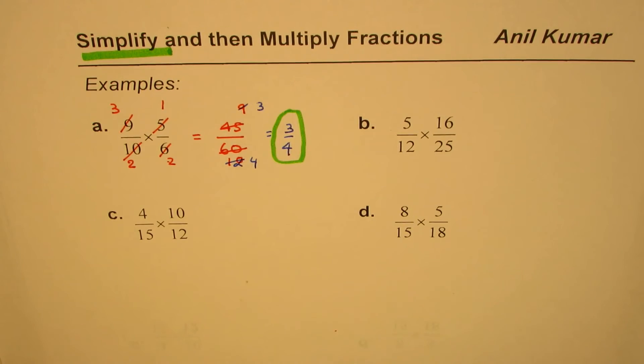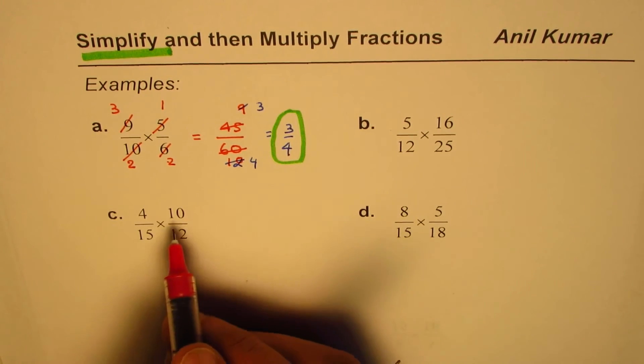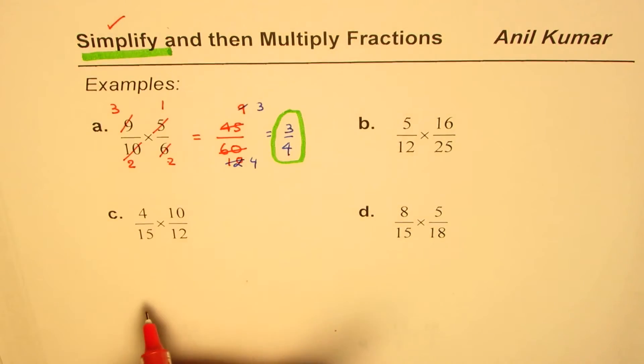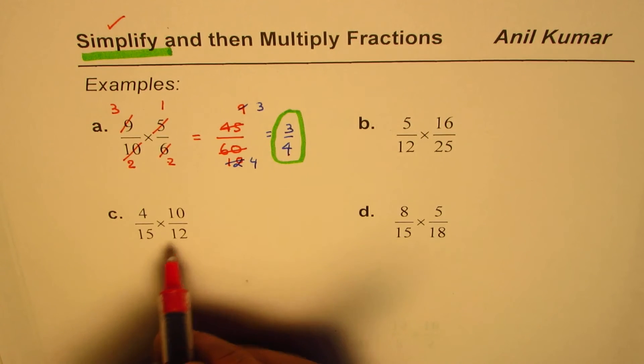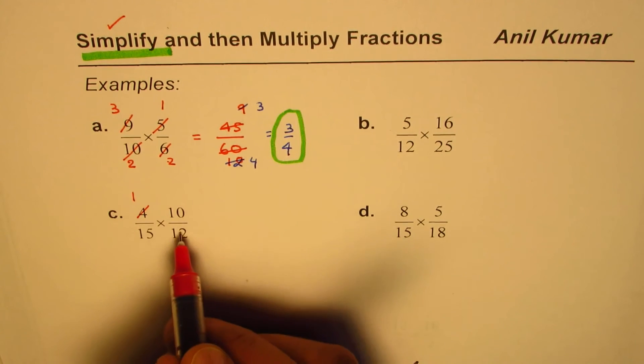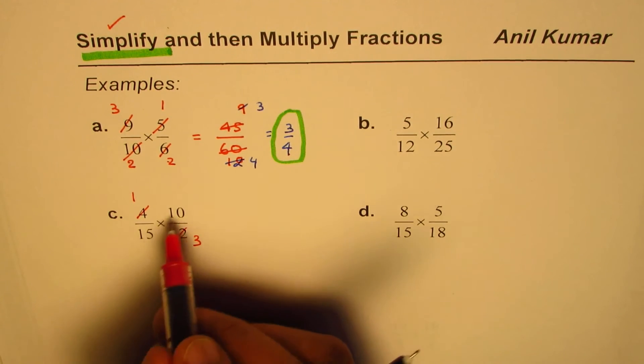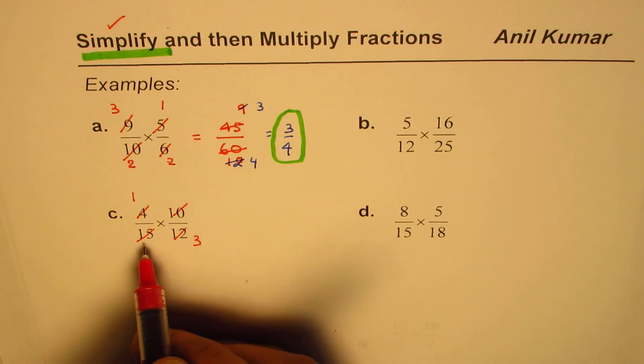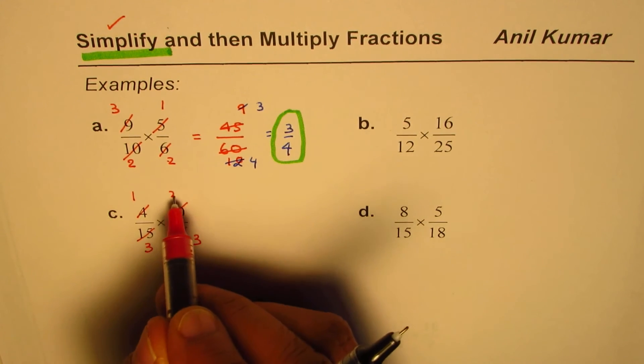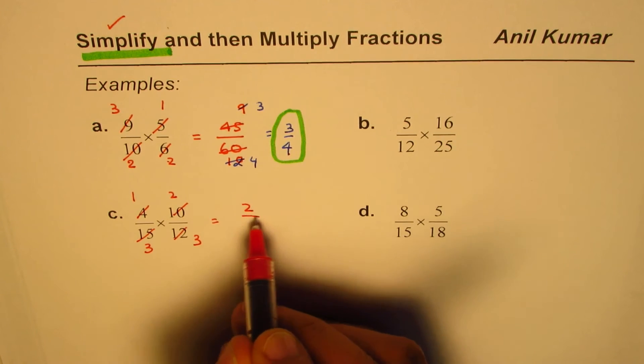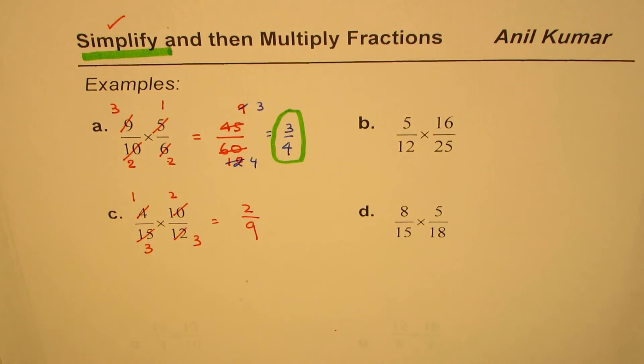Let's do this one. Hopefully this time I don't make a mistake since I'm going to simplify first. 4 and 12: divide by 4 to get 1 and 3. 10 and 5: divide by 5 to get 2 and 1. Now multiply: 1 times 2 over 3 times 3 equals 2 over 9. That is easy.